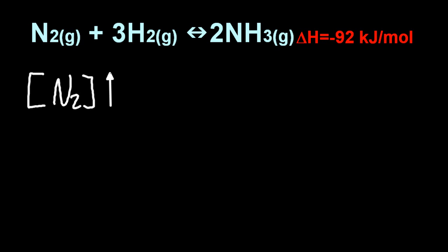If you increase the concentration of nitrogen or increase the concentration of hydrogen, the equilibrium is going to shift to the right and you're going to make more product. You're going to make more ammonia, which is the whole point of the Haber process.